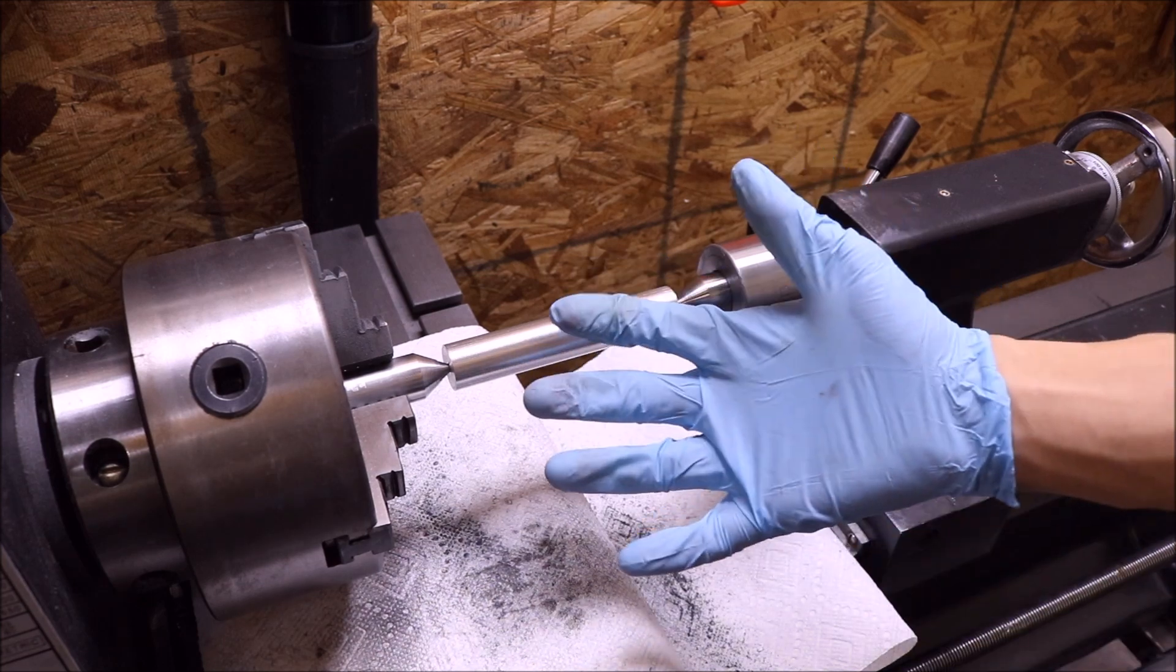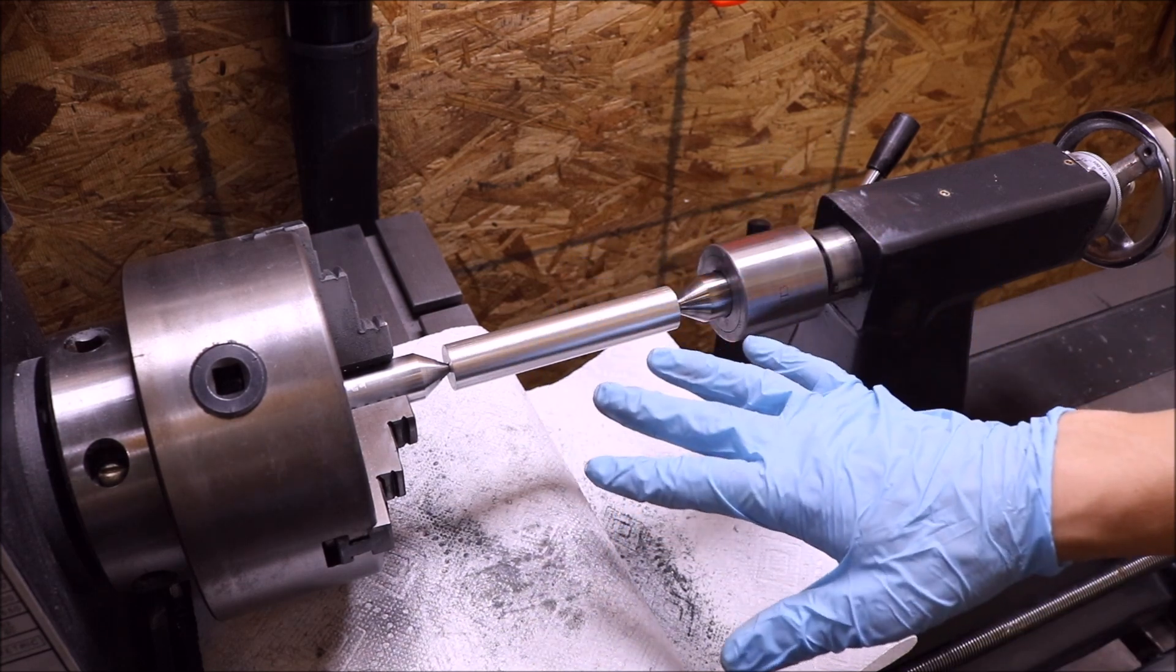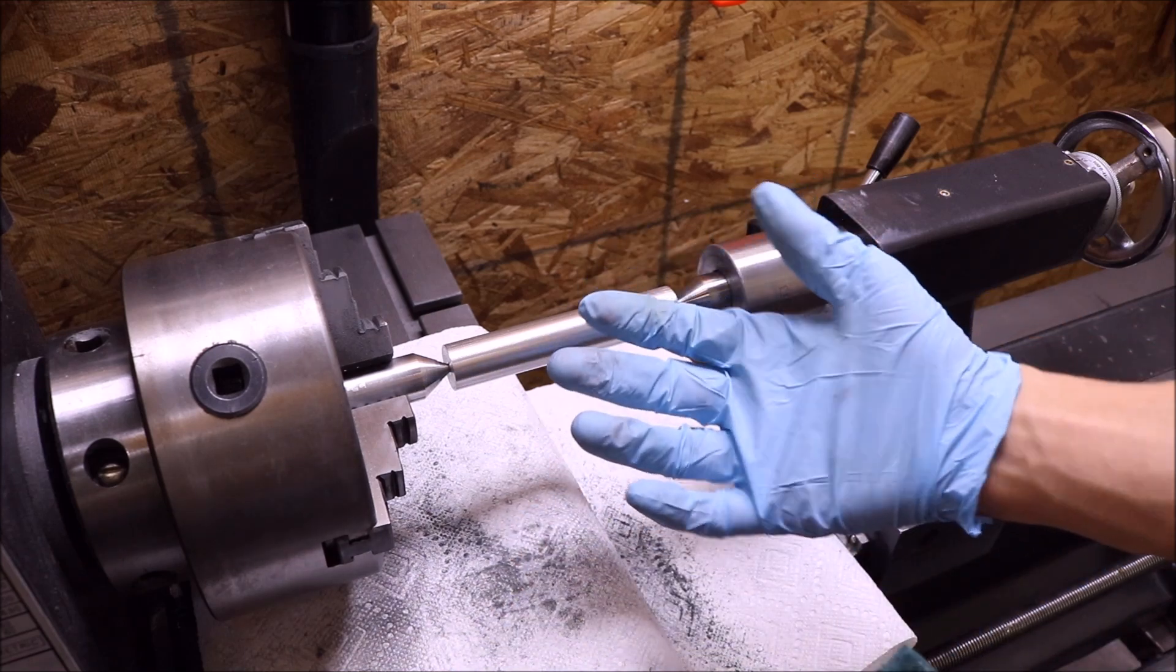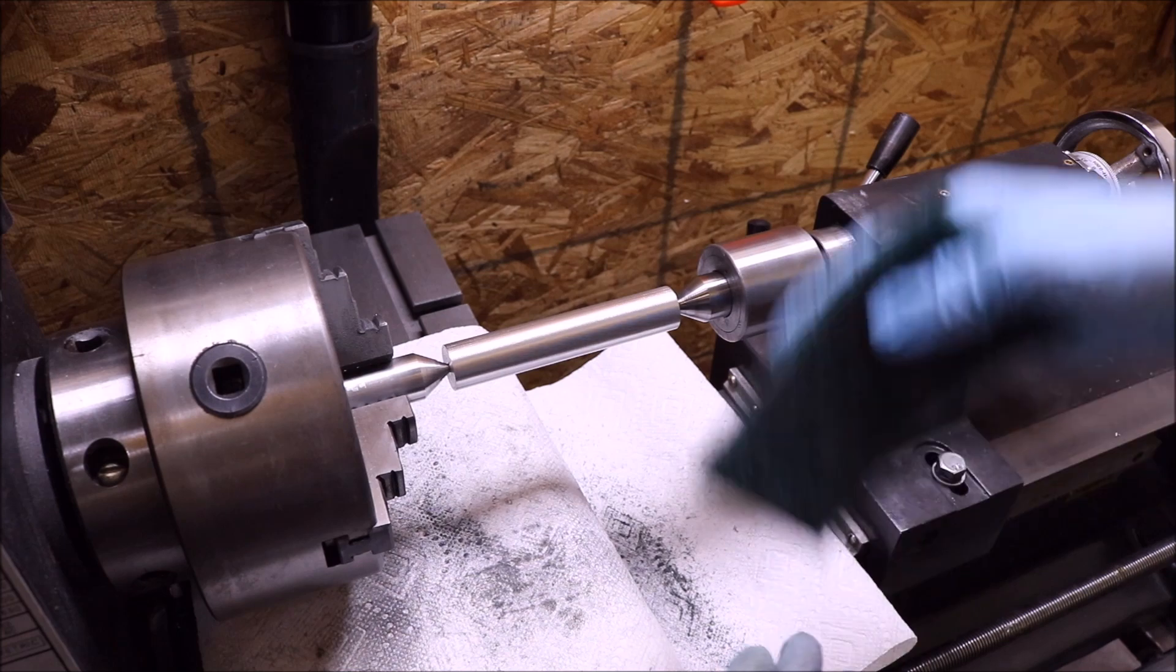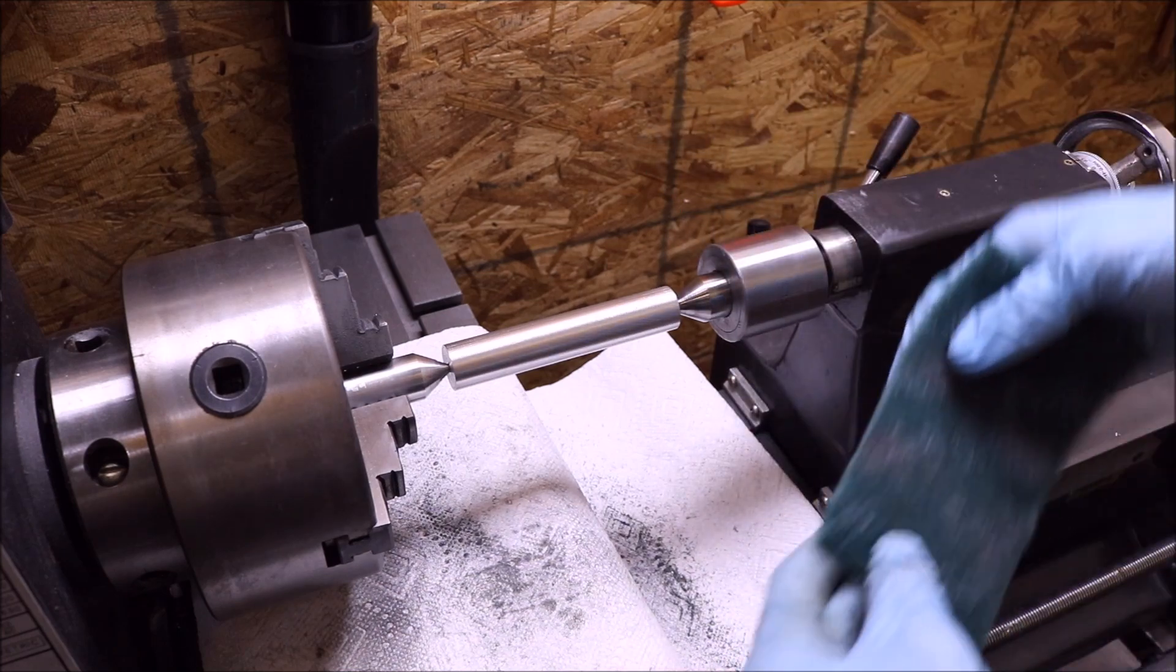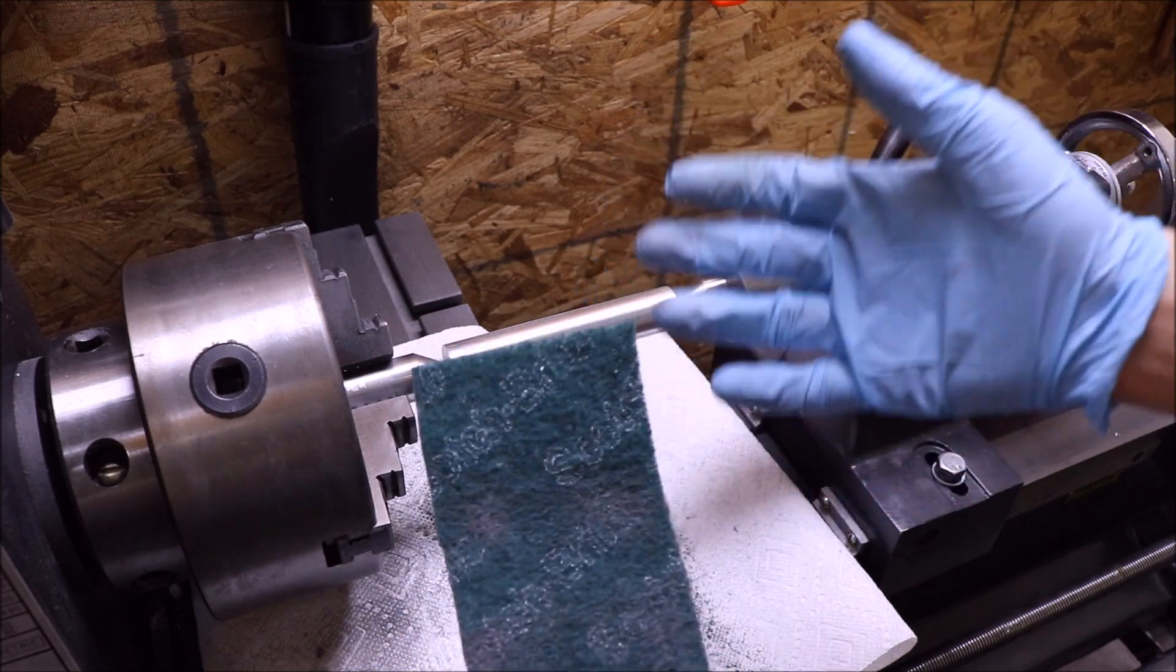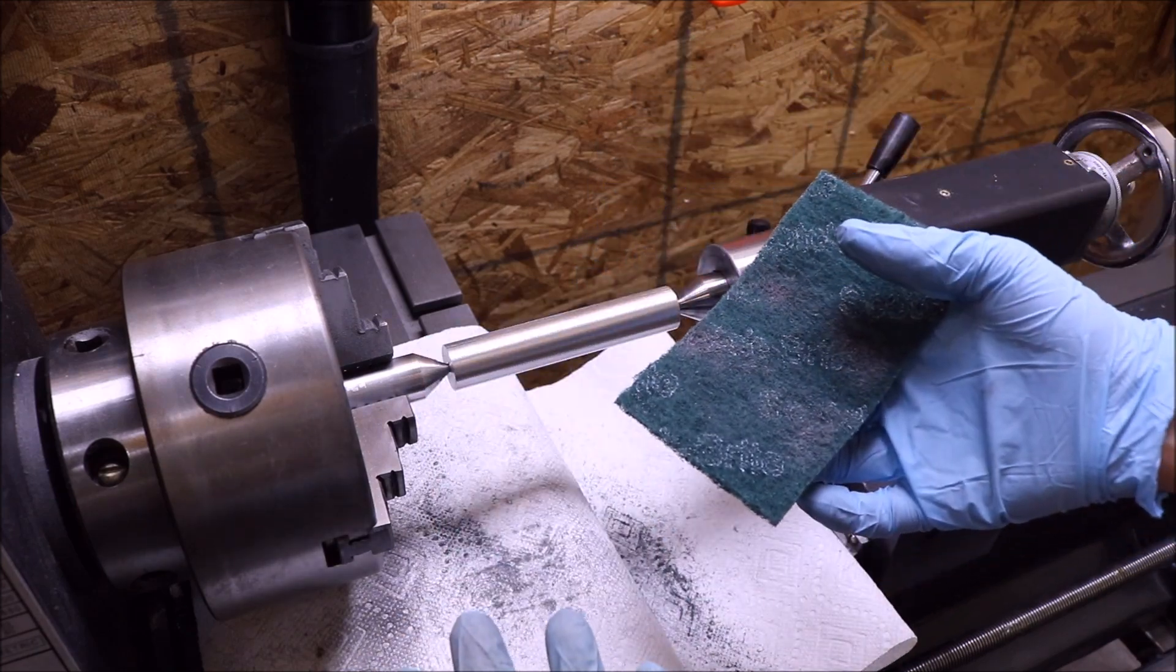Normally on a lathe I'd recommend not using any sort of glove. In this case, using a glove that's able to tear off instead of catch in the chuck is just fine with me. And in addition to that, I don't want to be getting the aluminum dust all over my fingers. It really gets to be a pain to get out, and I just prefer not having to deal with it.